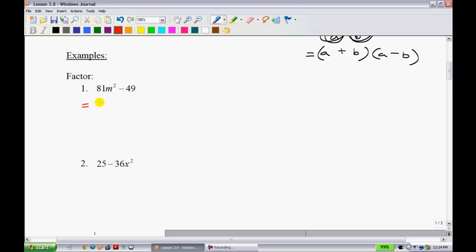I first start out with my two brackets. What's the square root of 81m²? I simply get 9m and 9m. The square root of 49 is 7. Make one of them positive, make one of them negative.